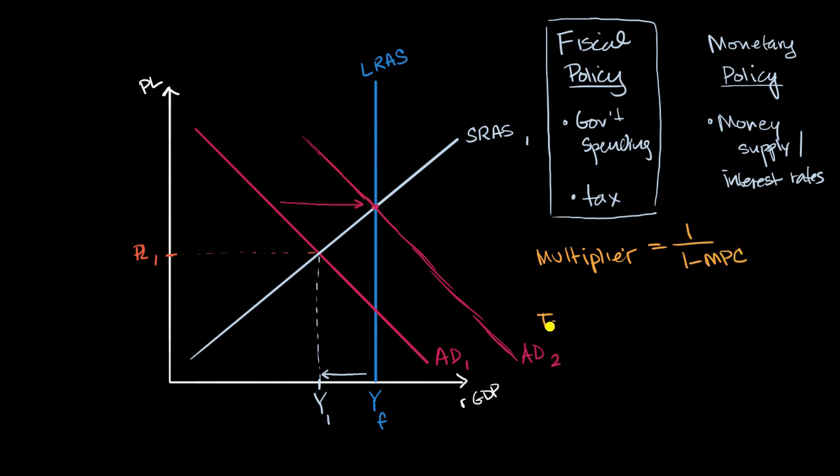While our tax multiplier is equal to, so if you have an increase in taxes, that would be the negative of the marginal propensity to consume over one minus the marginal propensity to consume.